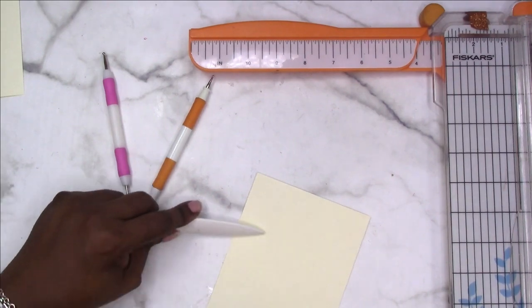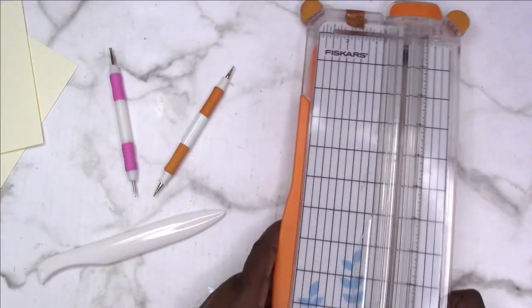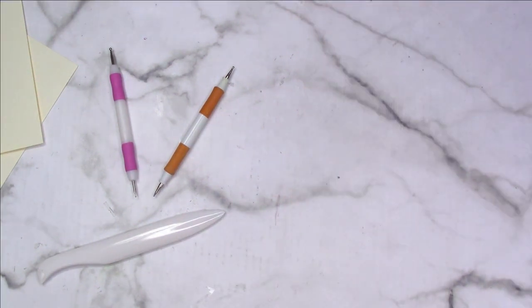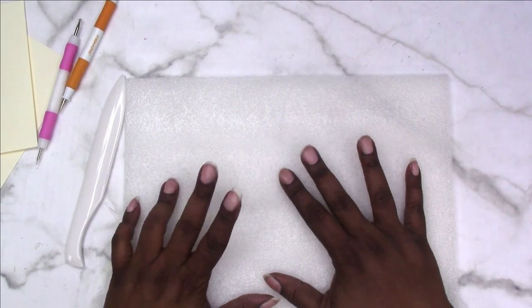Now, if you don't have a paper trimmer and you need to score, you can use a piece of foam, a mouse pad, something soft and a little cushiony.